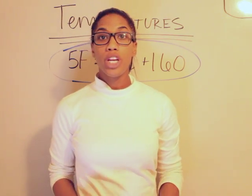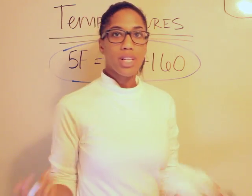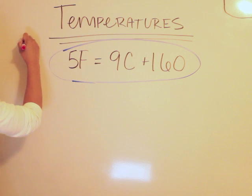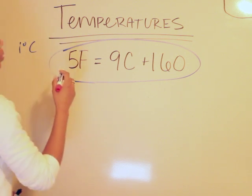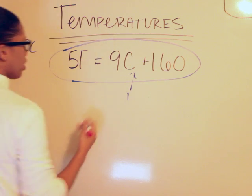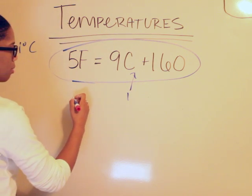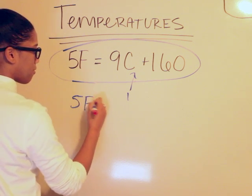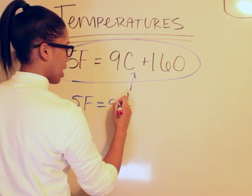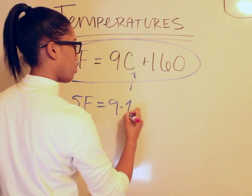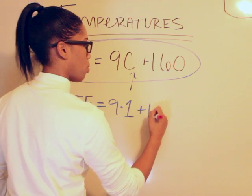Okay, now let's work another one the other way around. So let's say we're given 1 degree Celsius. In this case we would fill it in right here and place the one there. So it would be 5F equals 9 times, go ahead and put it in, 1 plus 160.